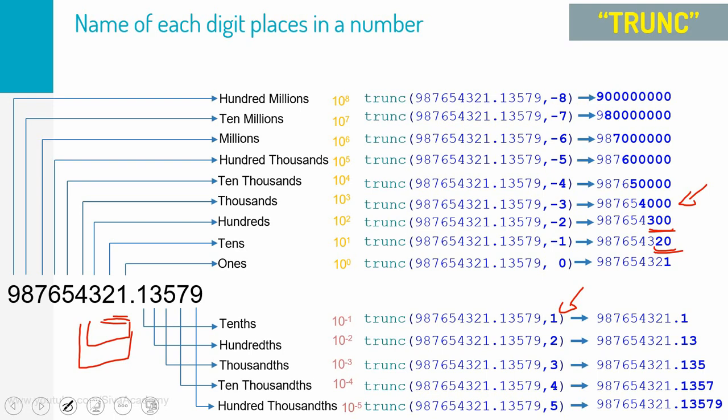ROUND will follow exactly the same behavior as TRUNC with one key difference: ROUND always checks the next digit. If the next digit is greater than or equal to 5, it rounds up to the immediate next number. With TRUNC, the result is always truncated to the lowest number. If you put more than -8 as the parameter, ROUND will always return 0.